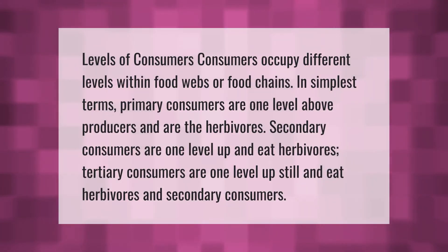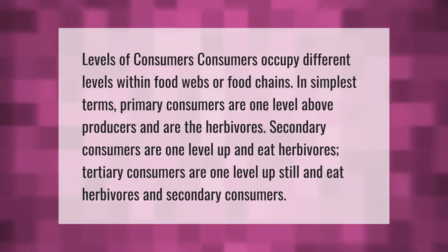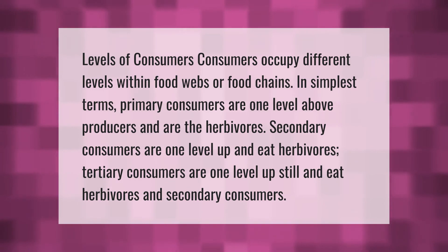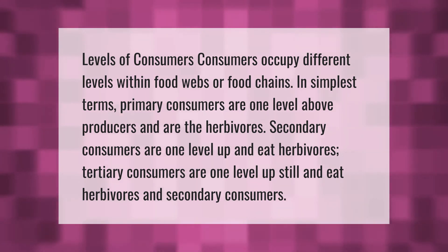Consumers occupy different levels within food webs or food chains. In simplest terms, primary consumers are one level above producers and are the herbivores. Secondary consumers are one level up and eat herbivores. Tertiary consumers are one level up still and eat herbivores and secondary consumers.